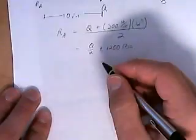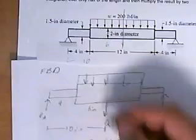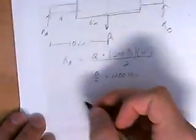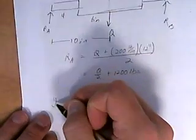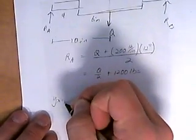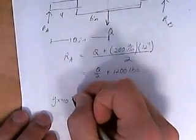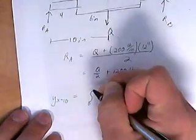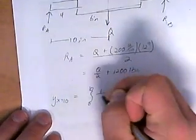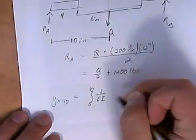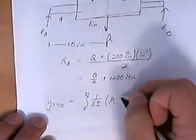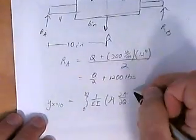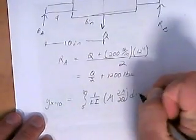Now, moving right on into Castigliano's theorem. Since it's going to be a bending system right here, we don't have any axial forces that we're working with. It's only the bending moment. We're going to go ahead and use the Castigliano's bending diagram at x equal to 10. We want to find the displacement at x equal to 10.